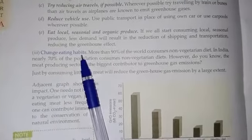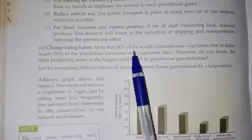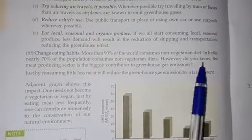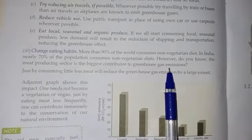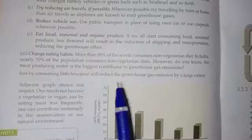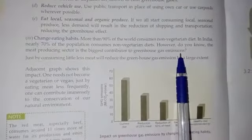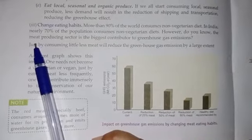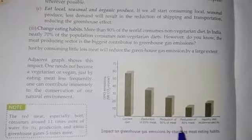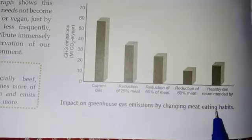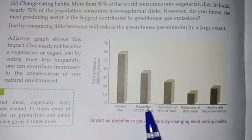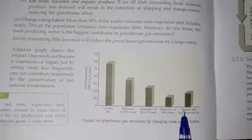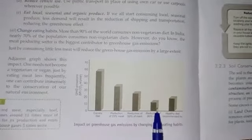Third point: change eating habits. More than 90% of the world consumes a non-vegetarian diet; in India, nearly 70% of the population consumes non-vegetarian diet. The meat production sector is the biggest contributor to greenhouse gas emissions. It is better to reduce meat consumption and replace it with green vegetables. A graph in the book shows the impact on greenhouse gas emissions by changing meat-eating habits — if we stop eating meat, greenhouse gas release will reduce. Thank you, we will continue further in our next lecture.